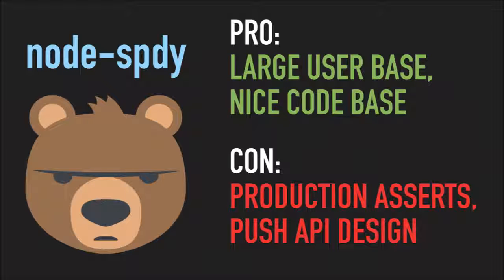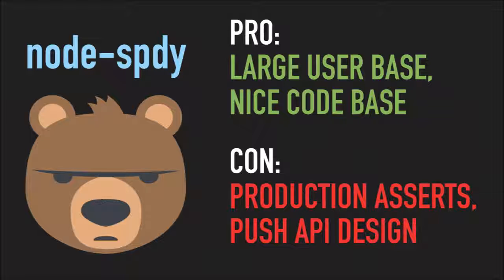The SPDY library has more users and I think its codebase is a little better structured. On the flip side, using asserts in production is a debated issue, but I'm not a fan of something that can crash my server without any recourse — if the server receives input it doesn't like, it just asserts, throws, and crashes my whole server. So I don't want to put it into production. Also the push API didn't satisfy my needs for my particular use case. I wanted to play with when I send the push promise versus when I send the actual payload, and the API isn't designed to accommodate that use case.